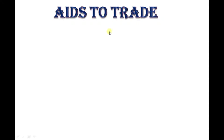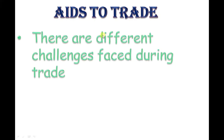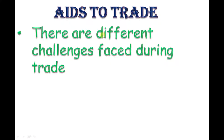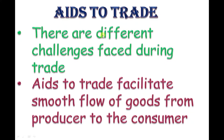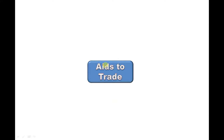Today we are going to look at aids to trade. As we define commerce as trade, we are going to look at these commercial services. Aids to trade facilitate smooth flow of goods from producer to the consumer, as we defined in the definition of commerce — it is the distribution from the producer to the consumer. We will look at how each aid to trade helps the producer, the traders, and the consumer.